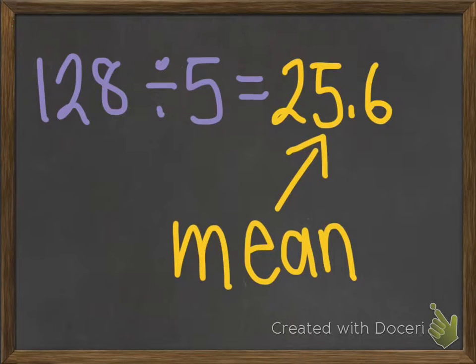Then, you divide the sum by the amount of numbers in the data. We have 5 numbers in our data. 128 divided by 5 equals 25.6. This means that 25.6 is our mean.